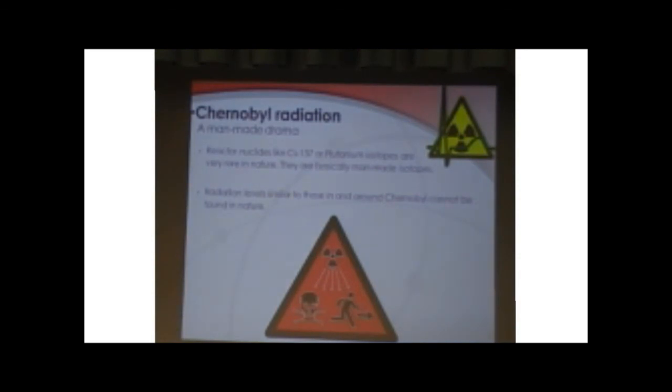Now, radionuclides like cesium-137 or plutonium isotopes are very rare in nature. They are basically man-made isotopes. Radiation levels similar to those in and around Chernobyl cannot be found in nature. Really? Well, let's check out that. So, my total dose for Chernobyl, while I did really extreme stuff, I also visited an old Soviet plutonium nuclear bomb laboratory and everything, the dose I received there was not too low as well. It was 0.3 millisievert for a couple of days. The average person in Europe gets about 2 millisievert per year from natural sources and industrial sources. The most naturally radioactive place, however, is in Ramsar in Iran.